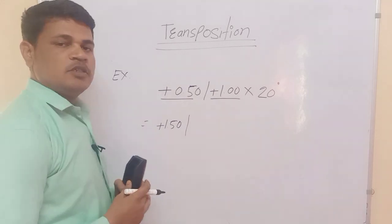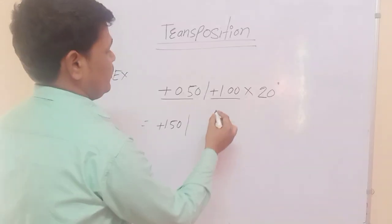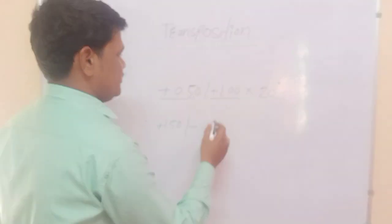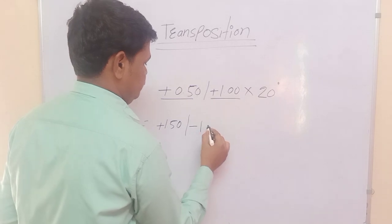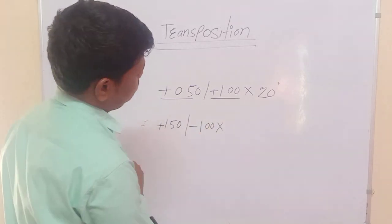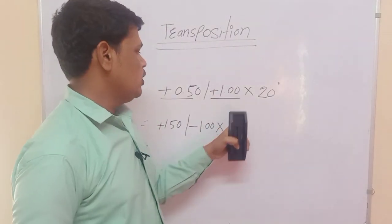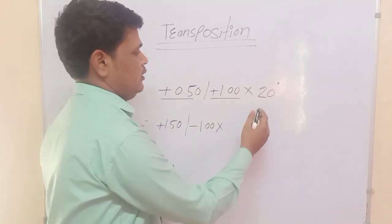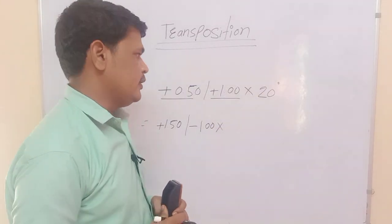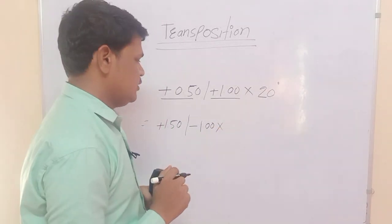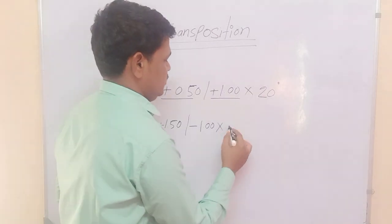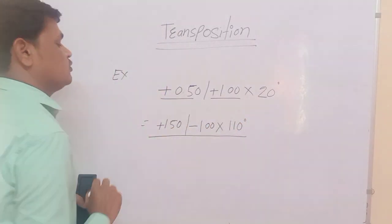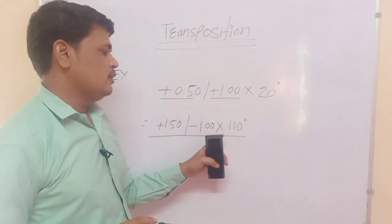Now for the cylindrical power: rule two says change the sign. Here the sign is plus, so we convert it to minus. The value remains the same: -1 diopter cylindrical. For the axis: 20 degrees is less than 90, so we add 90. The transposed axis is 110 degrees. The final transposition result is +1.5 diopter sphere, -1 diopter cylindrical at 110 degrees.